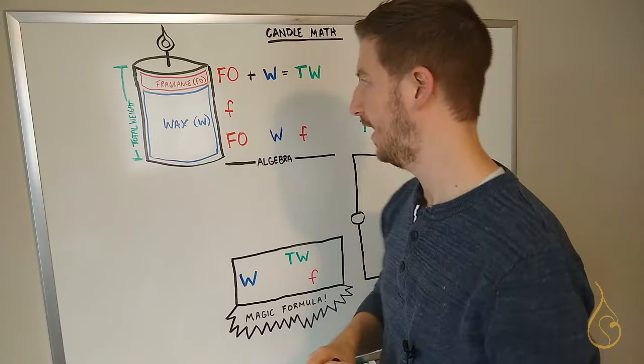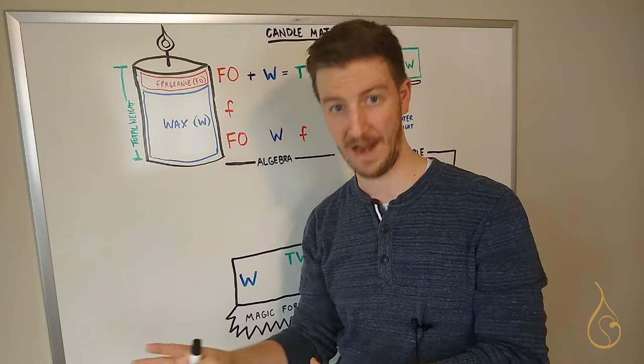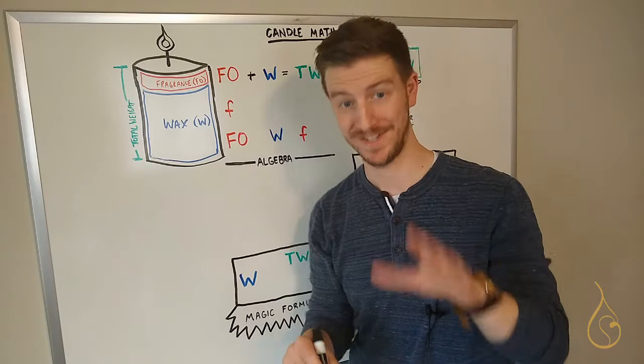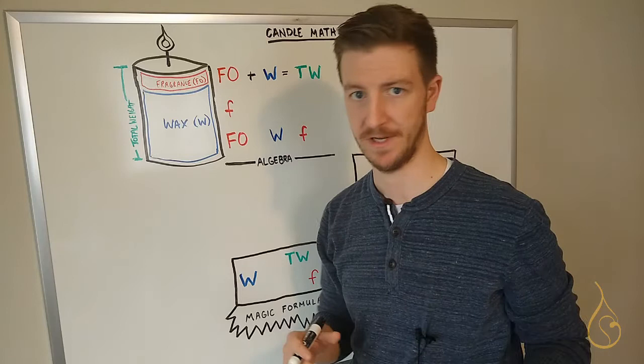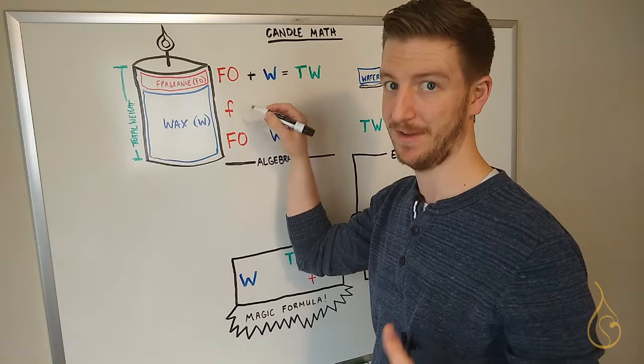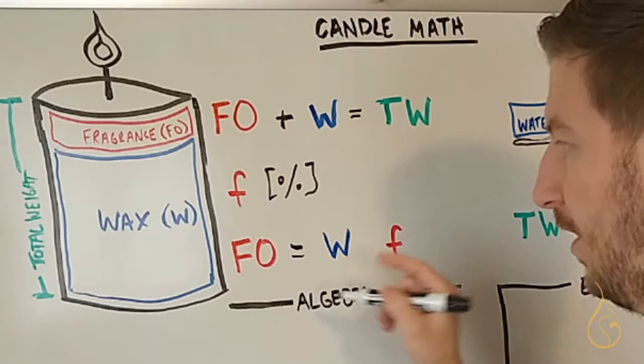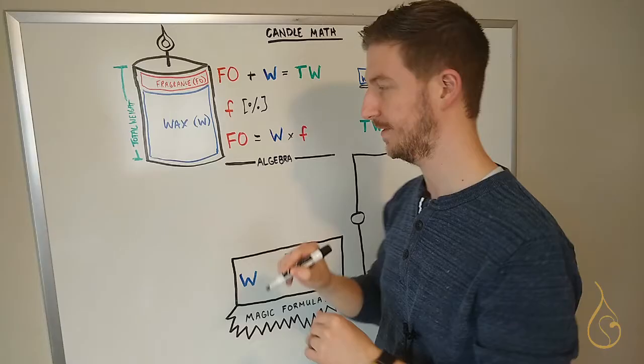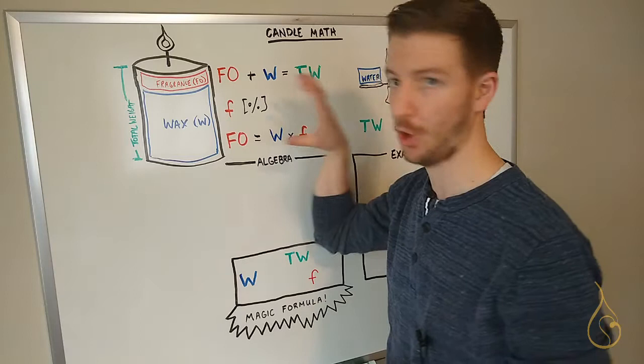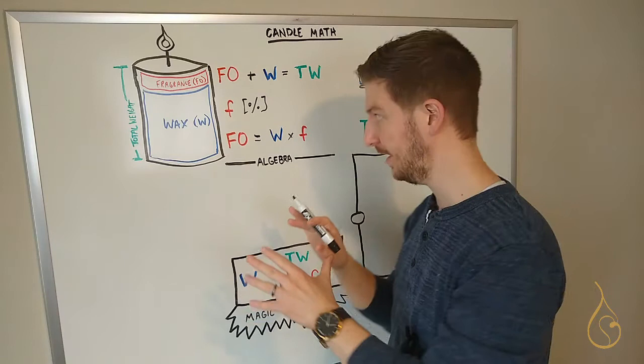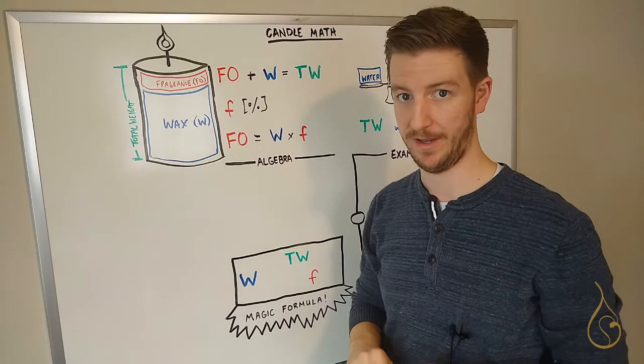So thinking about fragrance oil, we usually express that as a percentage of the wax. Lowercase f here will be our percentage of fragrance oil. So you might hear people say make a six percent fragrance oil or ten percent fragrance oil. That's what that number is. If we use lowercase f as our percentage, then the total fragrance oil, which is an amount of weight, is going to equal our wax times our fragrance load (FO = W × f). These are kind of the core concepts that are going to lead us down to this formula here. And I'm going to do some quick algebra here to kind of resolve all of these into a very simple formula that we can use to calculate our wax amount. So bear with me.